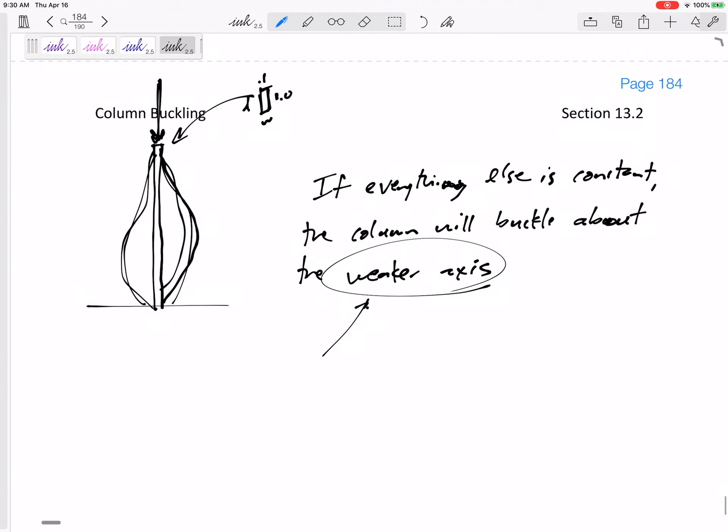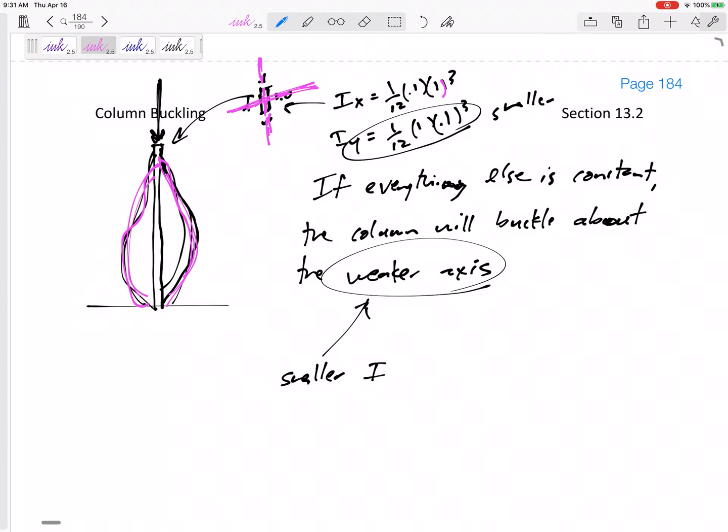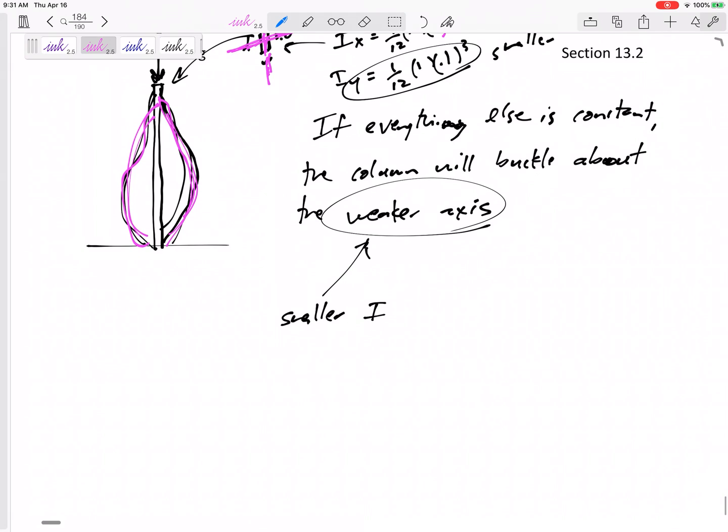The weaker axis is the axis with the smaller I, the smaller I. Think about this. This one, the I_X is one twelfth BH cubed. And that would be the I about that axis. All right. But the I about this axis, the I_Y is one twelfth HB cubed. This one is a lot smaller. And so it is going to buckle about this axis right here, which is this type of buckling, as opposed to buckling about the stronger axis, which would mean it would be bowing out towards me. All right. So it will buckle about the weaker axis. The weaker has the smaller I.